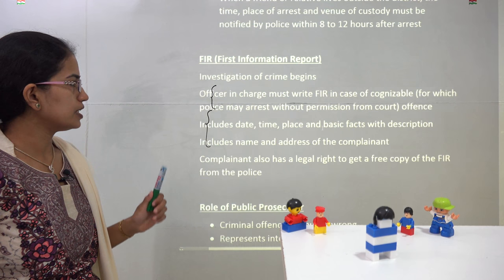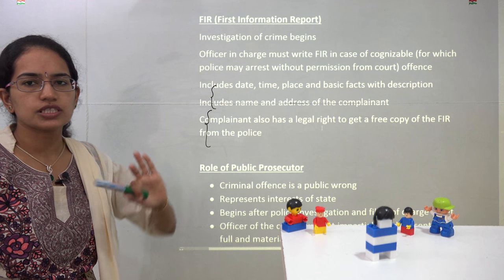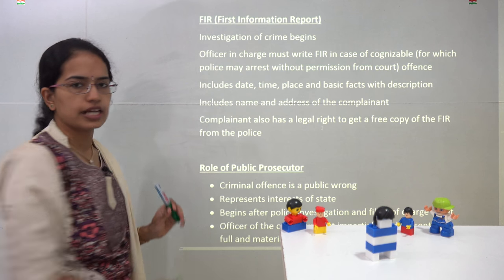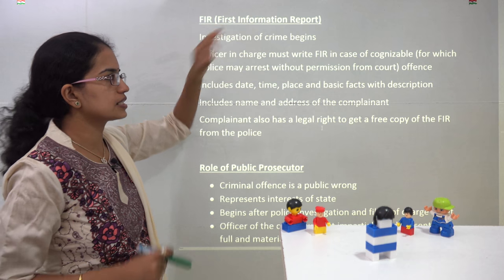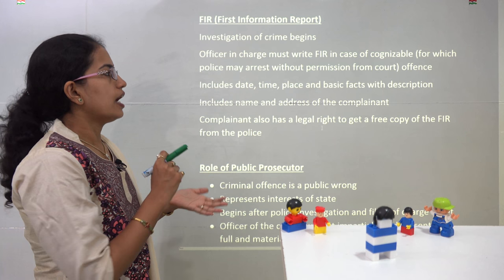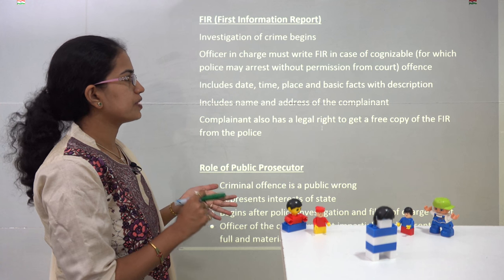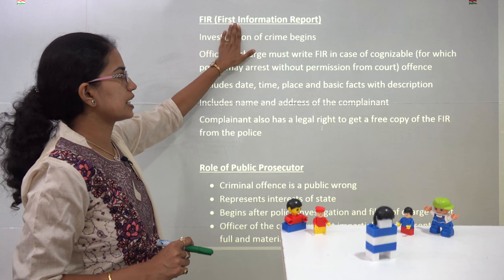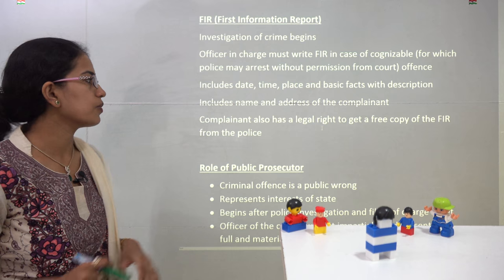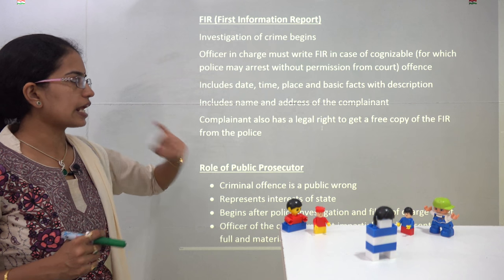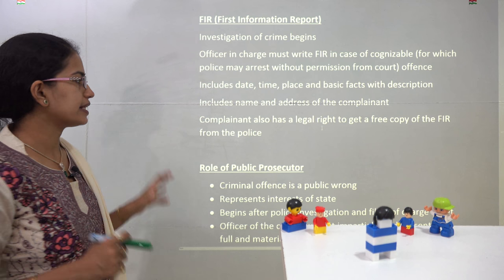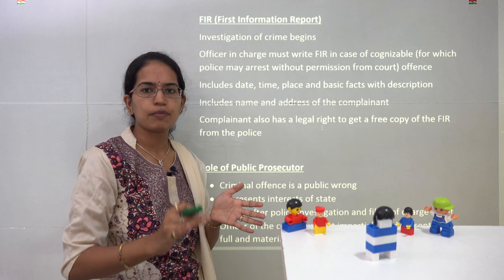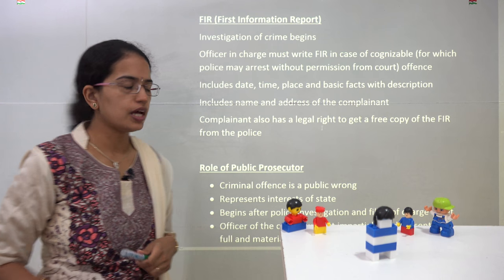The police then file an FIR — the First Information Report — under which the investigation of the crime begins. The officer in charge takes down the FIR if they feel the case is cognizable, meaning a case for which the police can arrest without permission from the court. The FIR should include the name, address, time, basic facts, and dates, and the complainant must be given a copy of the FIR.